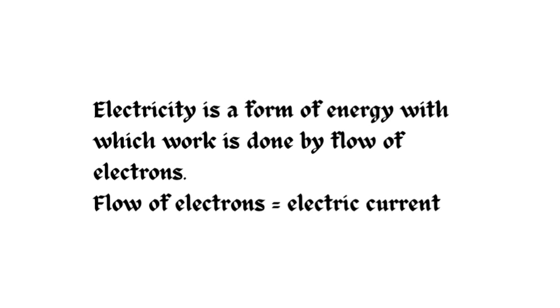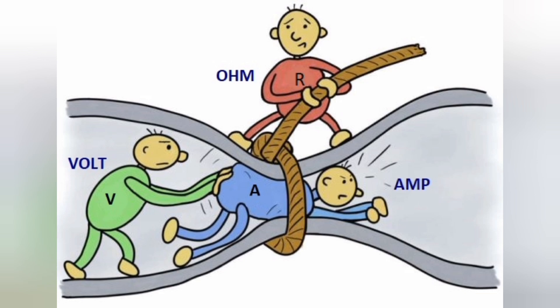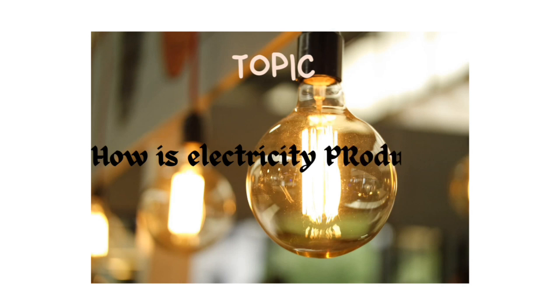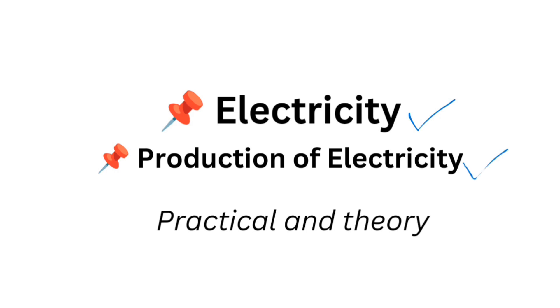The flow of electrons is equal to electric current. Electric current doesn't just start flowing — it is always prepared by an electric force, better known as electric voltage. In this video, our interest is in the propagation or generation of electricity, specifically how the alternating type — AC — is generated. We know there is DC and there is AC, but our interest here is how exactly AC electricity is generated.